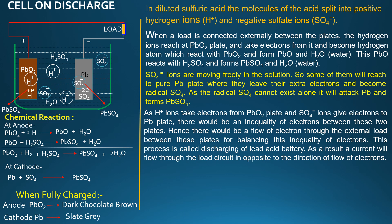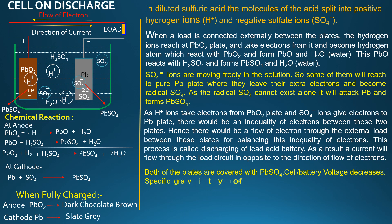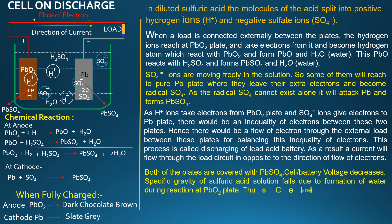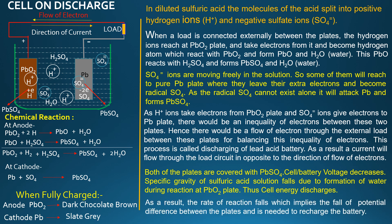As a result, a current flows through the load circuit in opposition to the direction of flow of electrons. Both plates become covered with lead sulfate, and the cell or battery voltage decreases. The specific gravity of the sulfuric acid solution falls due to the formation of water during the reaction at the PbO2 plate. Thus, cell energy discharges, the rate of reaction falls, implying a fall in potential difference between the plates, and the battery needs to be recharged.